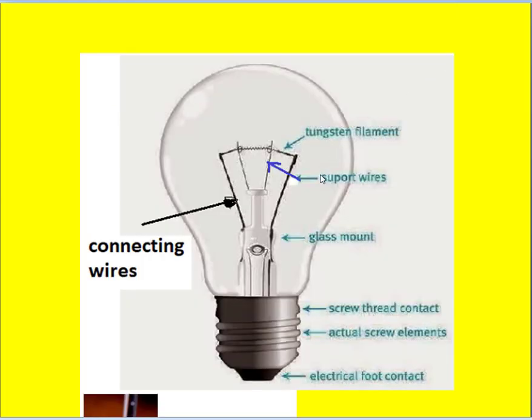So this lamp utilizes vacuum or argon plus nitrogen gas in this bulb. Vacuum is used in this bulb when the rating of the incandescent lamp is less than 40 watts.